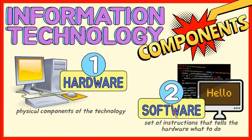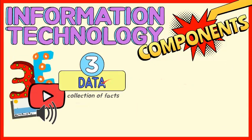Software is a set of instructions that tells the hardware what to do — software is not tangible. Programmers type out lists of instructions that tell the hardware what to do. We can think of data as a collection of facts. For example, the city you live in, your phone number, and your email address are all pieces of data. Data is also intangible. By themselves, pieces of data are not very useful, but aggregated, indexed, and organized together into a database, data can become a powerful tool for businesses.